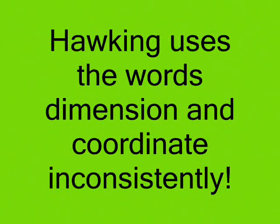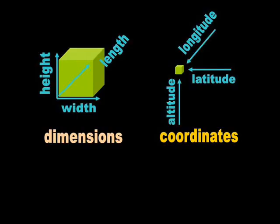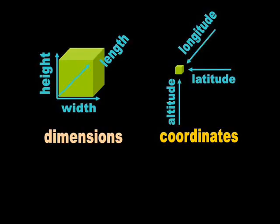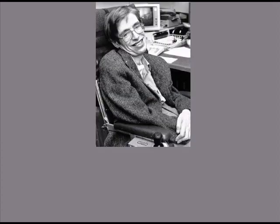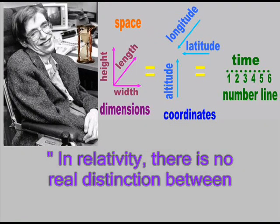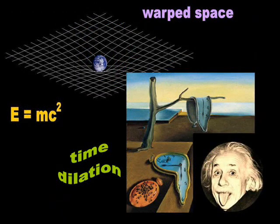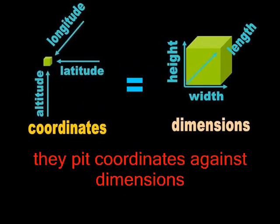Like the majority of mathematicians, Hawking uses the terms dimension and coordinate inconsistently, jumping back and forth between the dimensions and coordinates of ordinary speech on the one hand and mathematical number lines on the other. More fundamental yet is Hawking's amusing claim that time is a dimension. In relativity, there is no real distinction between the space and time coordinates. This may be true in relativity — it certainly is not true in science. Therefore, it is not surprising when Hawking confuses coordinates with dimensions.